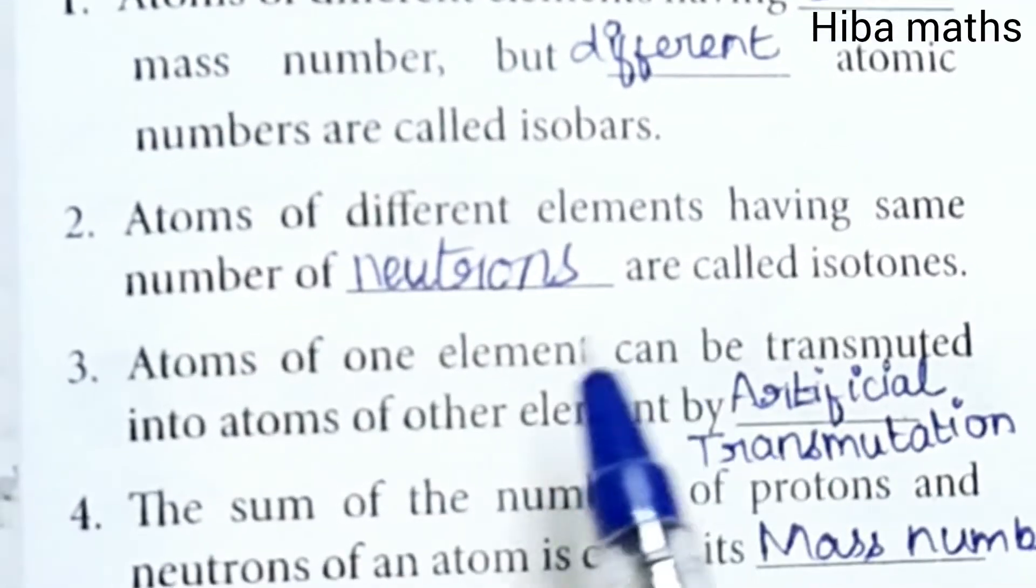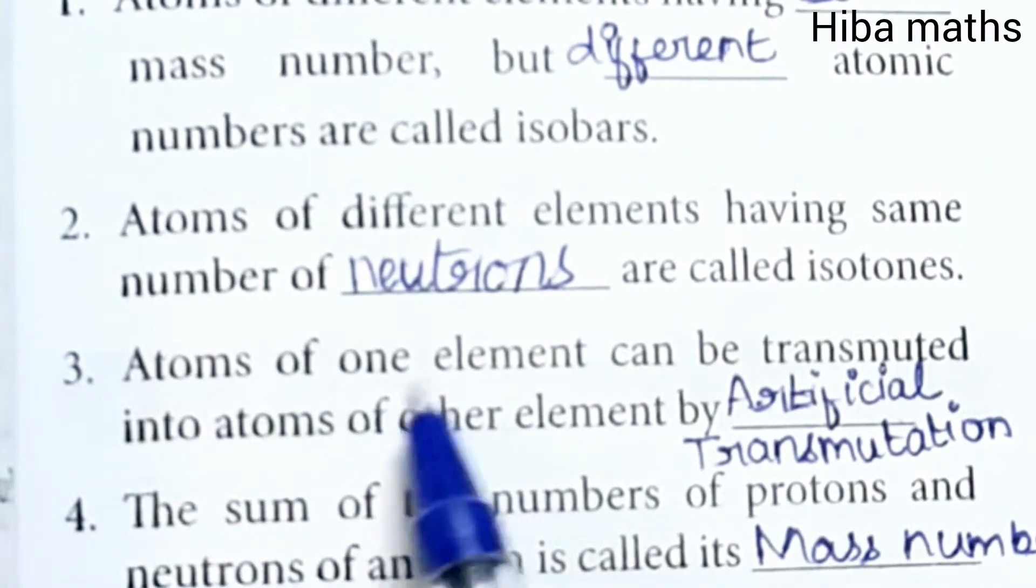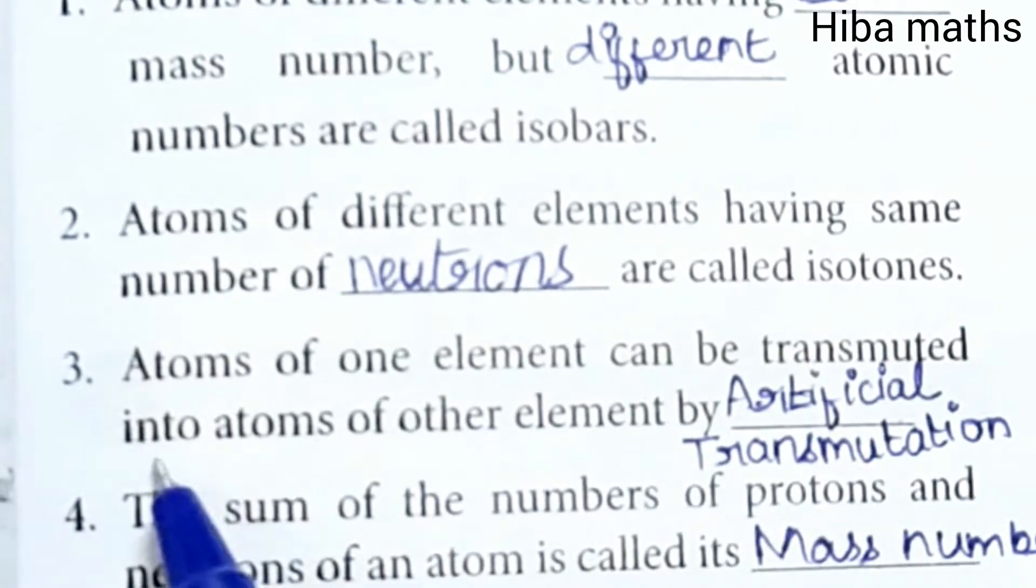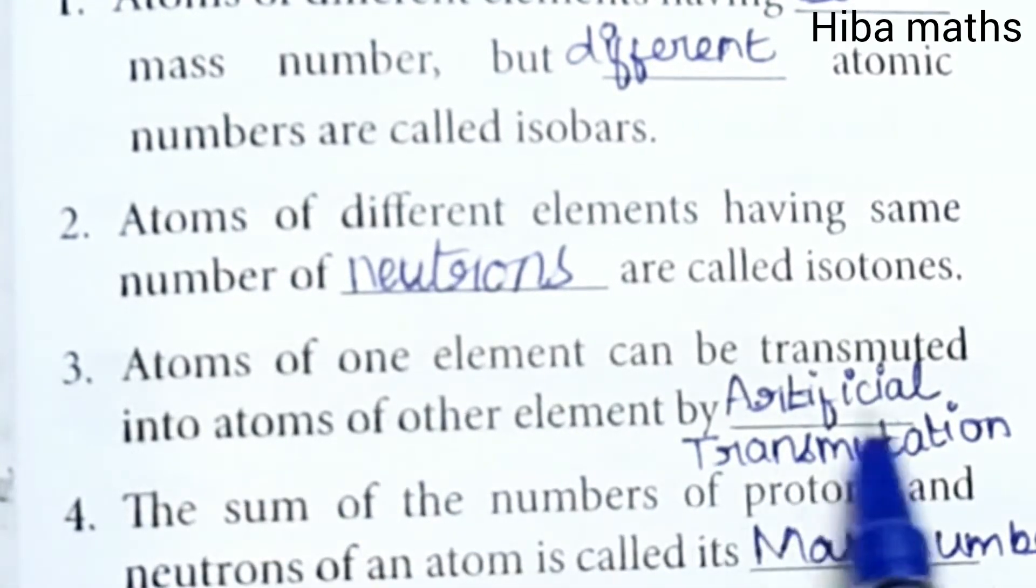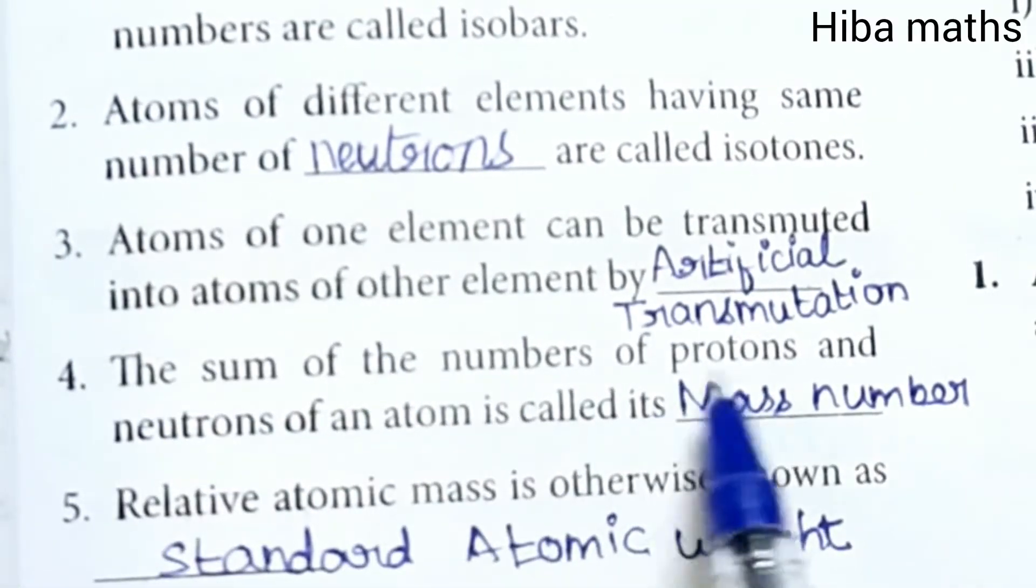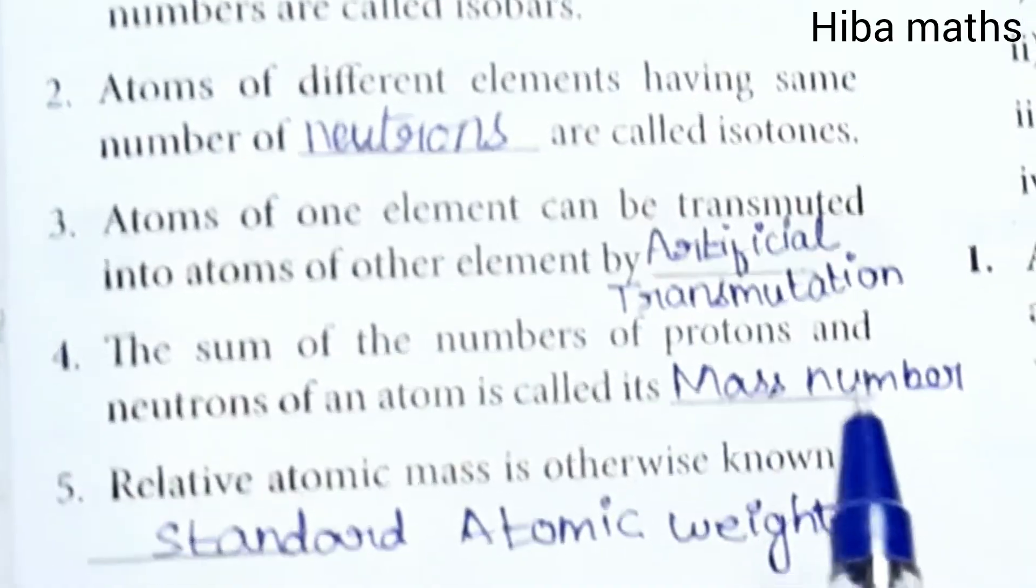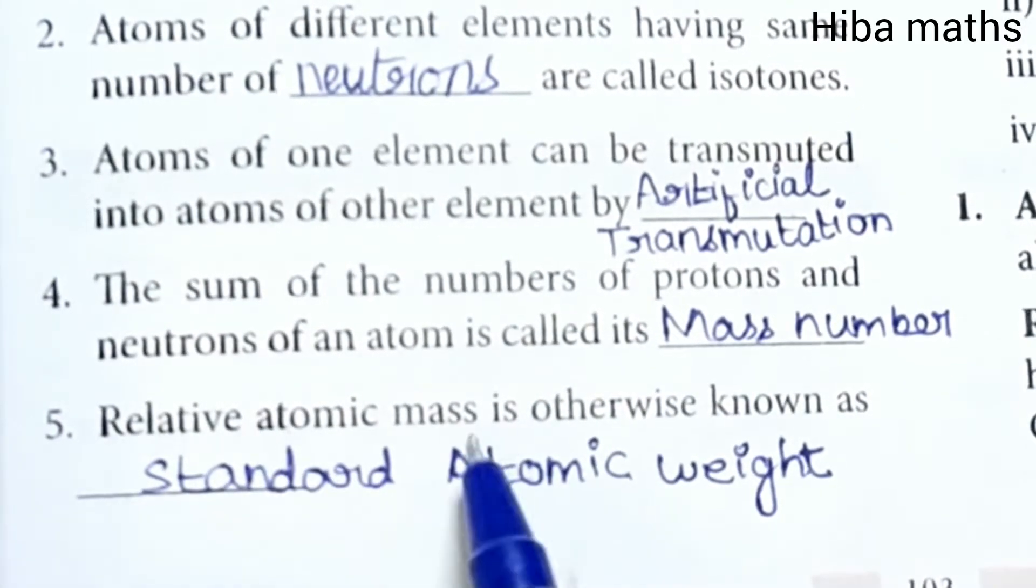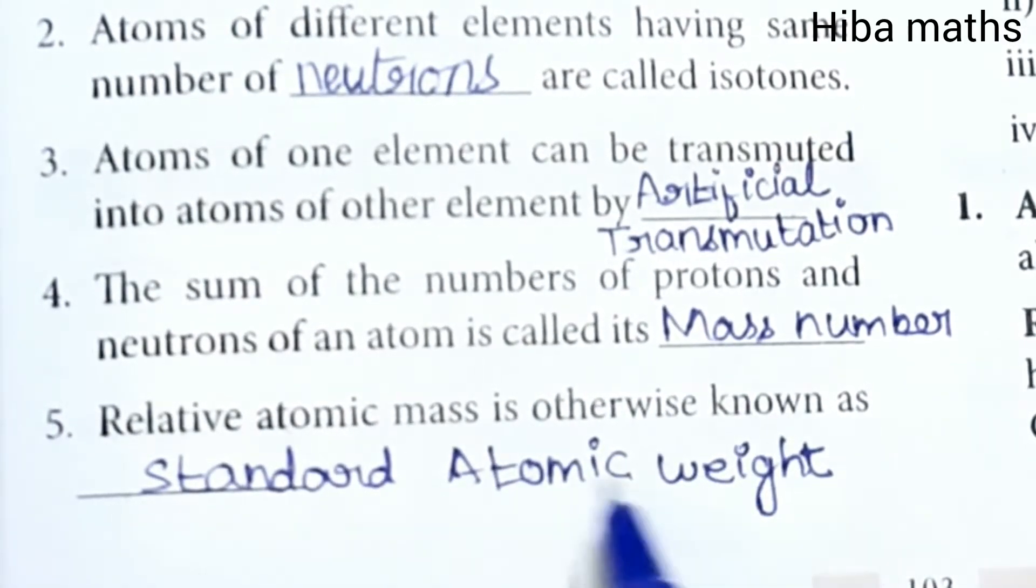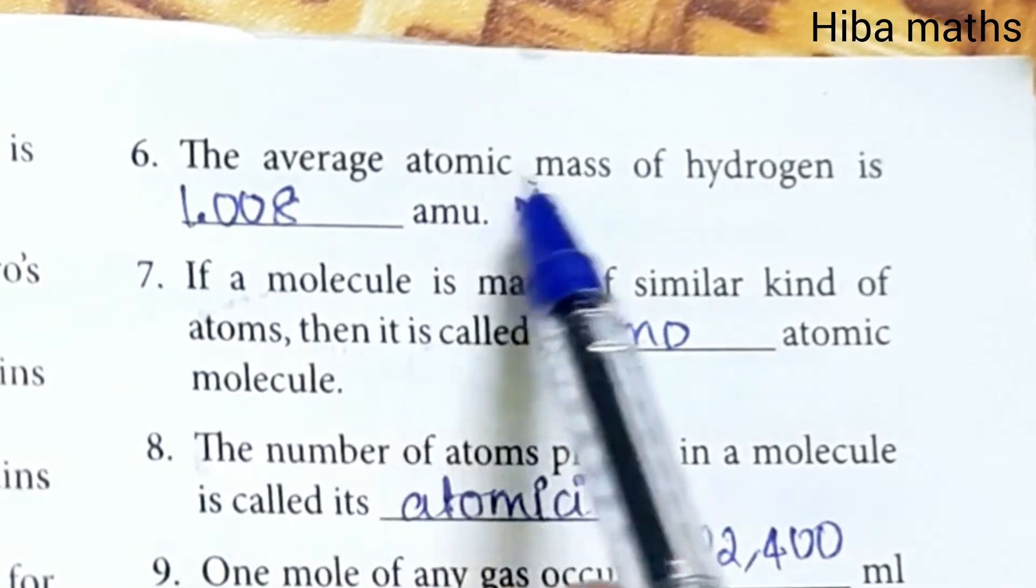Atoms of one element can be transmuted into atoms of another element by artificial transmutation. The sum of the number of protons and neutrons of an atom is called its mass number. Relative atomic mass is otherwise known as standard atomic weight.